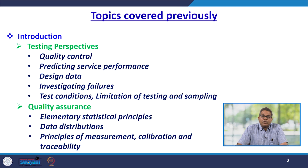We have covered the introduction in the previous section, in which we discussed the testing perspective, quality control, predicting service performance, design data, investigating failures, test condition limitations, and sampling, giving a brief idea about quality assurance, especially elementary statistical principles, data distributions, principle of measurements, calibration and traceability.